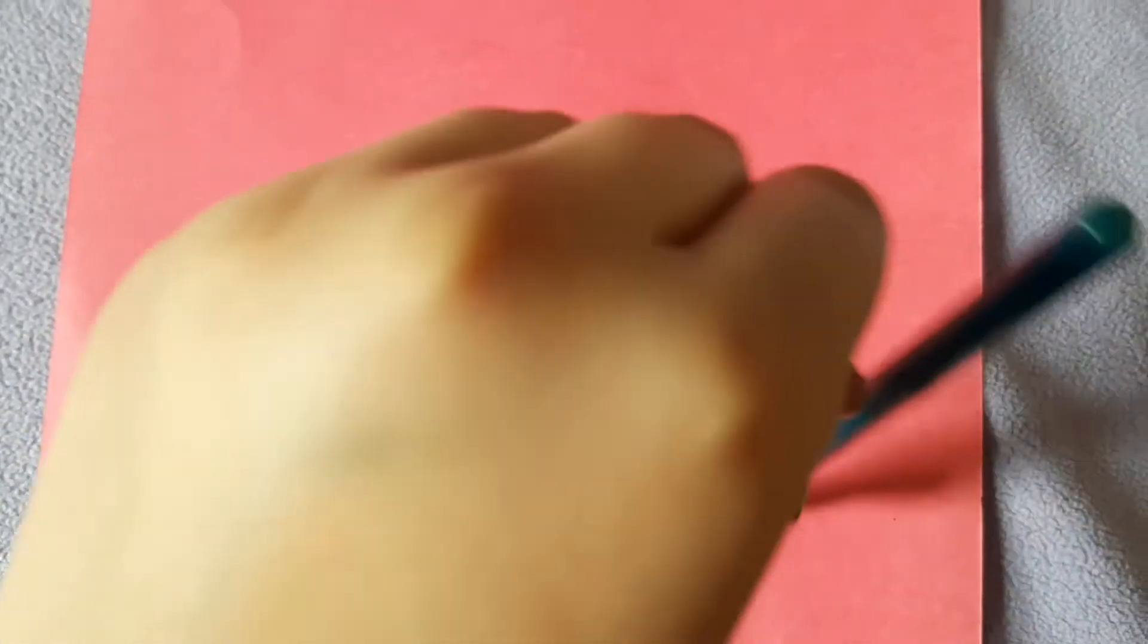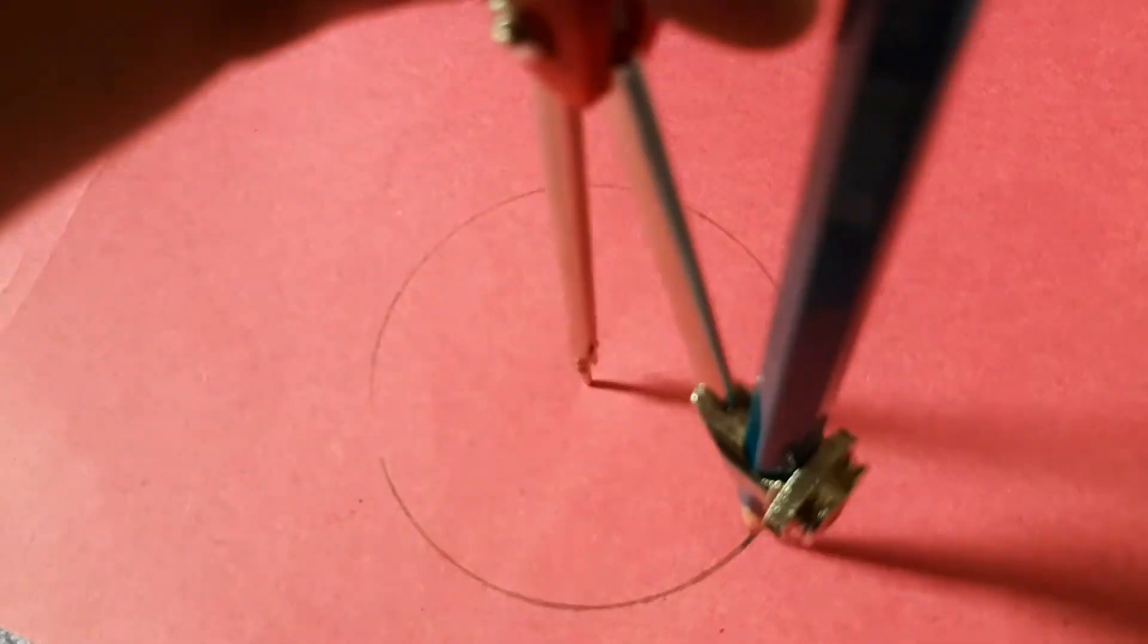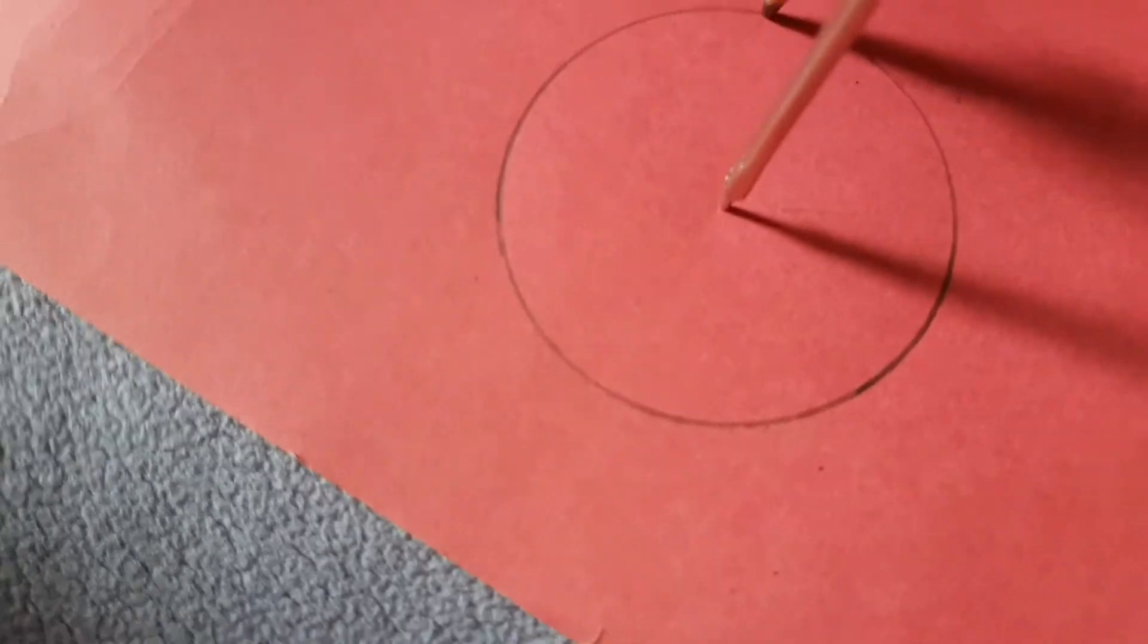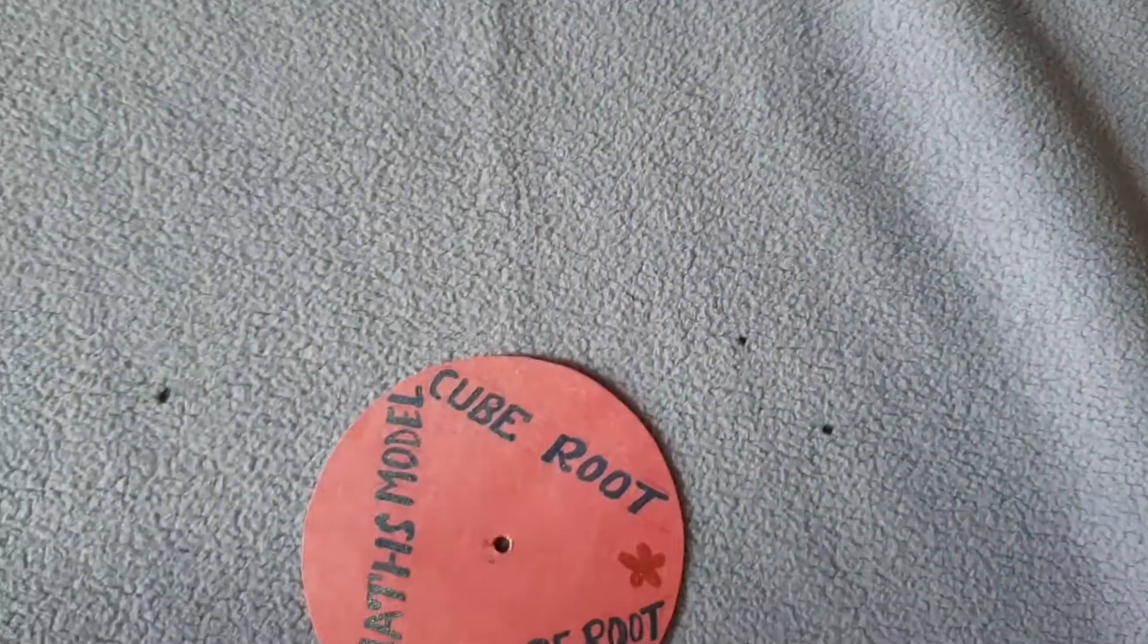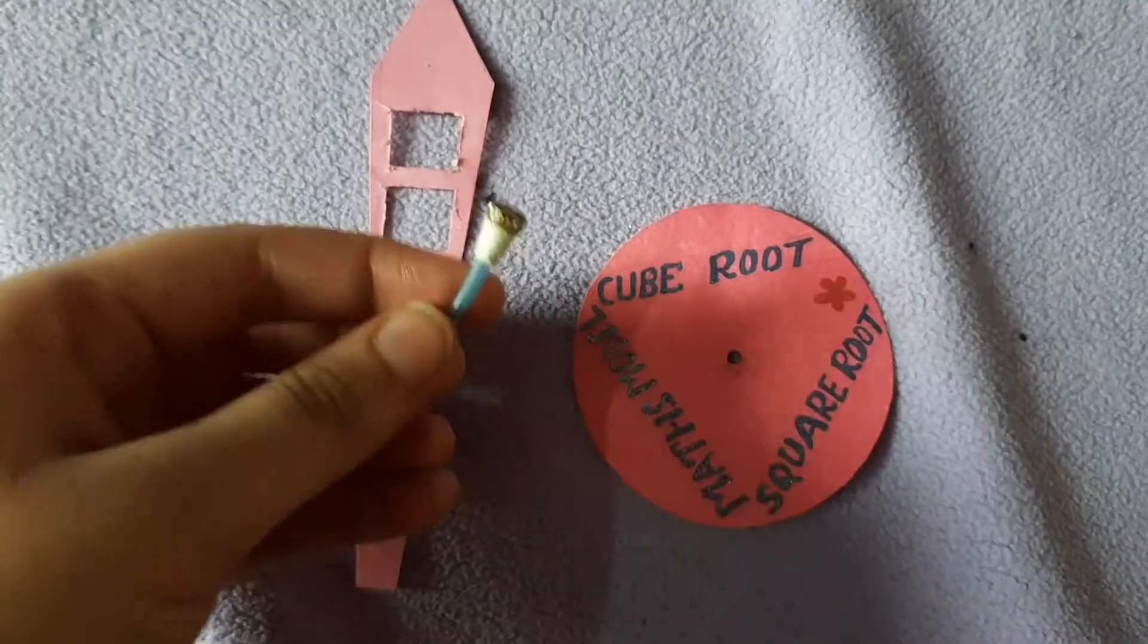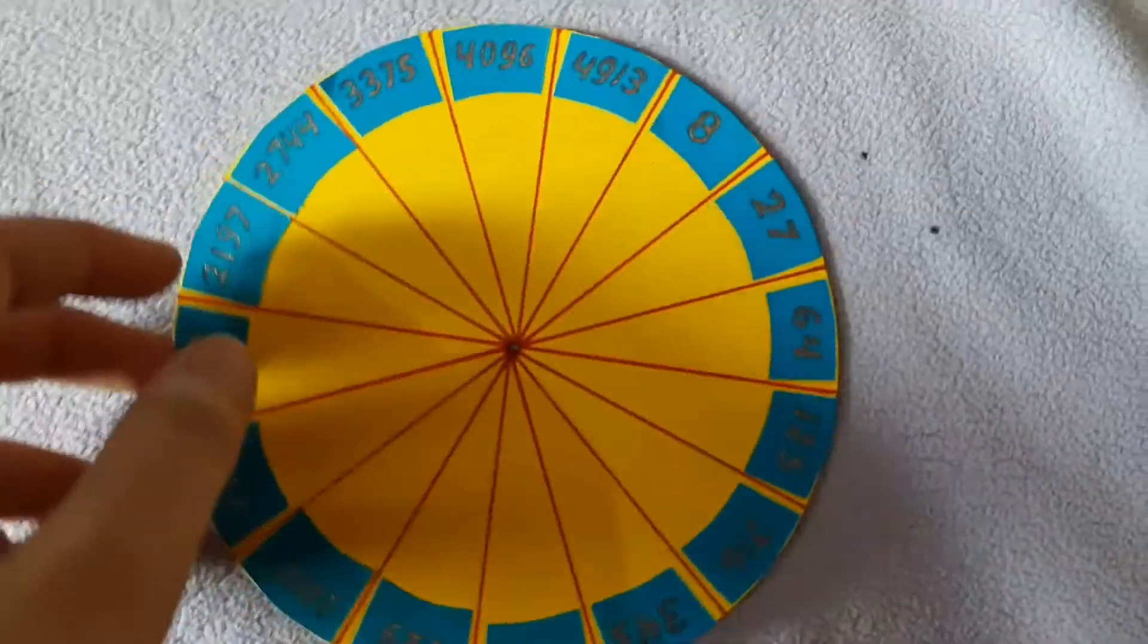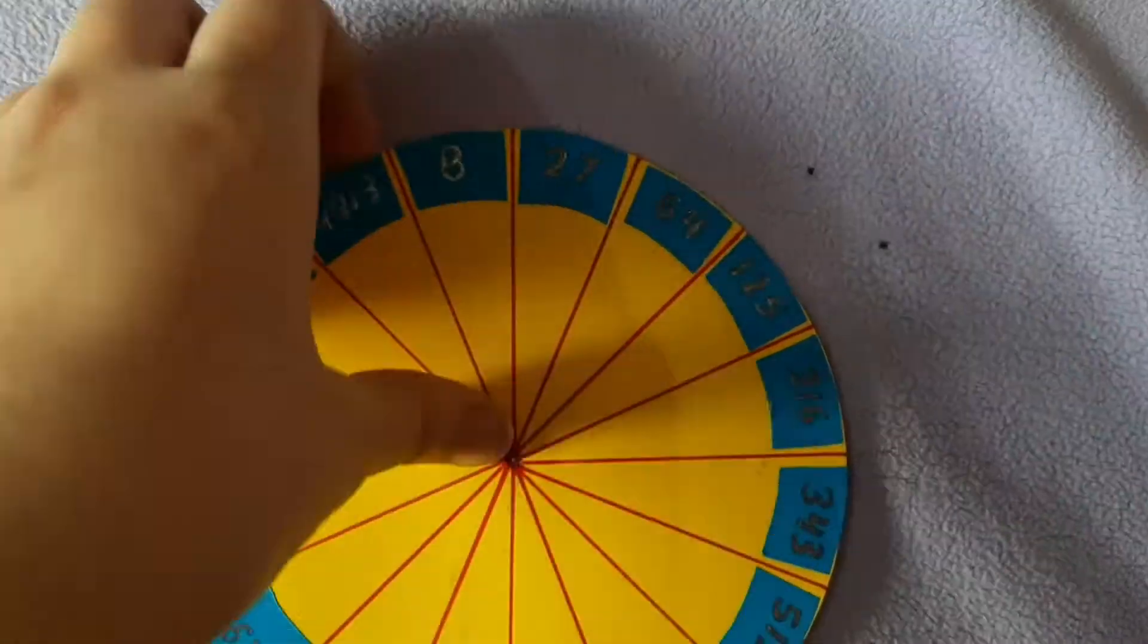Now on a sheet make a medium-sized circle. Cut it down with the help of scissors, and you can write like this on the circle. Also make a hole in this circle. These are the numbers, these are the cube roots, and now we are going to write square roots.